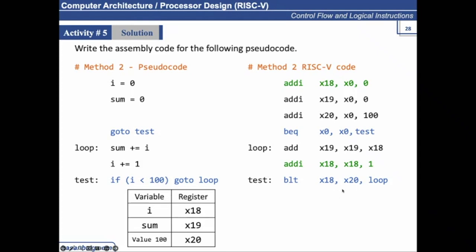As long as it satisfies, it will keep looping back. Once the value of i becomes greater than 100, this condition will not satisfy, which means that it is not going to take a branch loop.